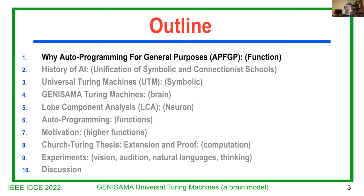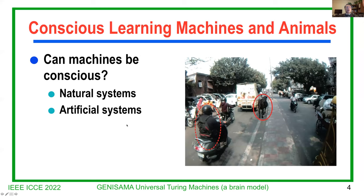Number one: APFGP. The central theme of this tutorial is about conscious learning. In other words, humans, animals on the natural side, and robots and machines on the artificial side need consciousness while they learn. So it's kind of upside down. We thought we need to have intelligence, then we can talk about consciousness, but actually they are independent with each other. You need intelligence to get consciousness, but you also need consciousness to become intelligent. So it's called conscious learning. Consciousness is not handcrafted, but must be learned.